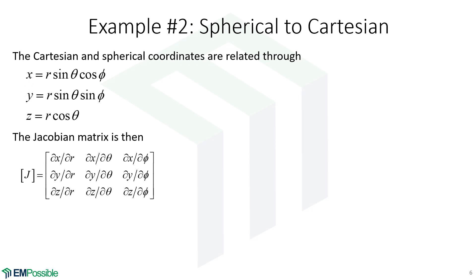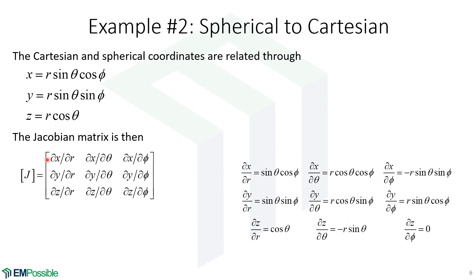We go one element at a time. The first element is the derivative of X with respect to R: R is just a multiplier, so it's simply sine theta cosine phi. The partial derivative of X with respect to theta: the derivative of sine theta is cosine theta, so we end up with R cosine theta cosine phi. The derivative of X with respect to phi: the derivative of cosine phi is negative sine phi, so we have negative R sine theta sine phi.